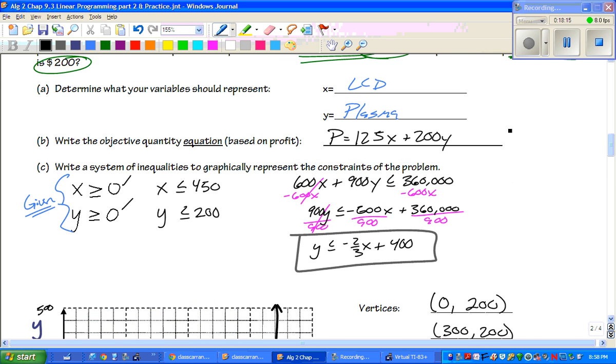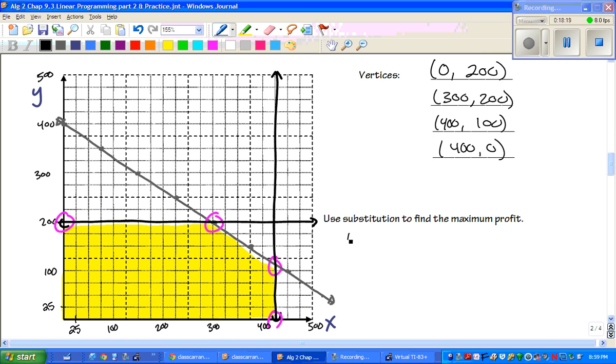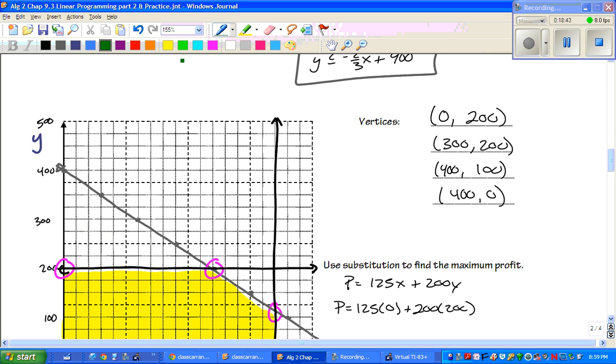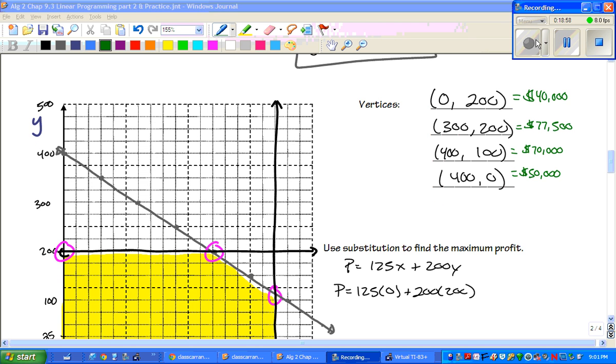So, you're going to plug all of those into now, your profit, which is P equals 125X plus 200Y. And remember, when we're showing the work, you're actually going through and plugging in each one of those. And you're going to tell me how much money it is. So, I'm going to pause the video right there. I want you to tell me what all of those equations equal up to, and which ones, where would they maximize their profits? All right. Good luck. Pause that video. All right. And there you go.